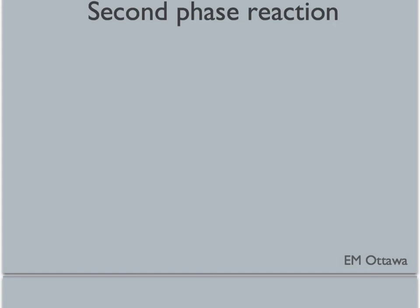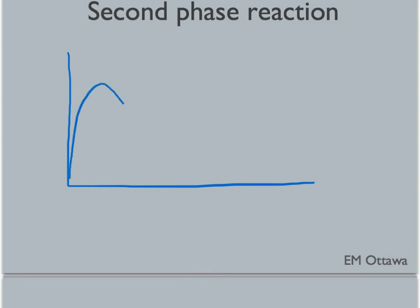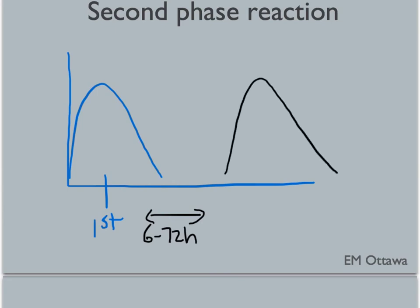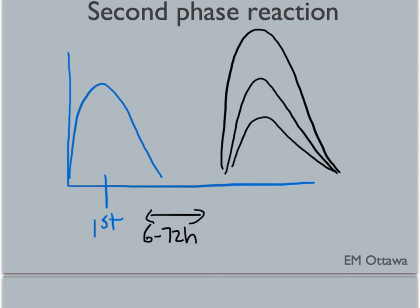In some patients, there is a phenomenon known as a second phase reaction. After the first reaction, patients can have a recurrence of their symptoms even though they were not re-exposed to the same allergen. This can happen between 6 to 72 hours after the first reaction, and can be the same, worse, or less severe. Steroids may decrease the occurrence of the second phase reaction and lessen symptoms if it does happen. However, the evidence is not conclusive, so it is up to clinician's discretion. If prescribed, prednisone 50 milligrams oral daily for a few days is typically used.